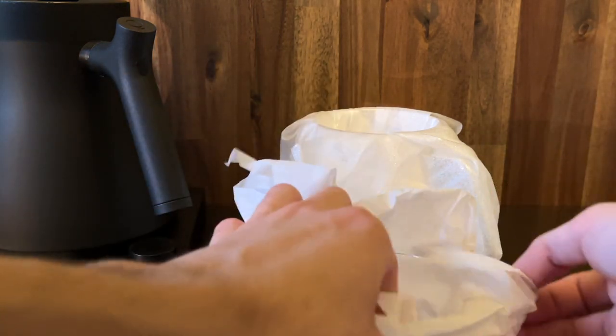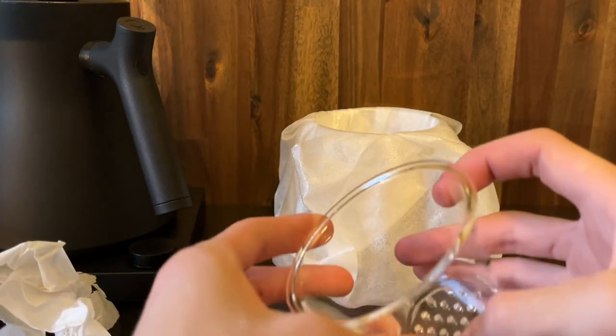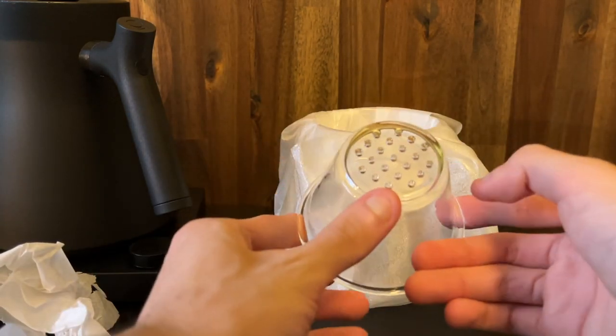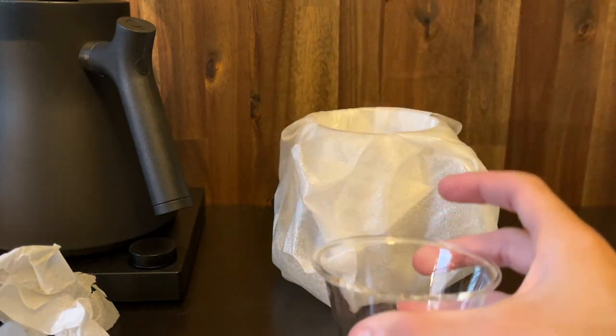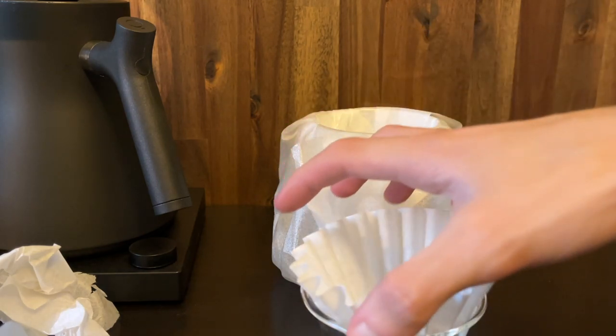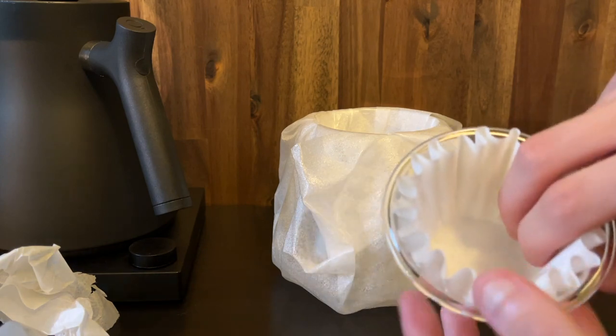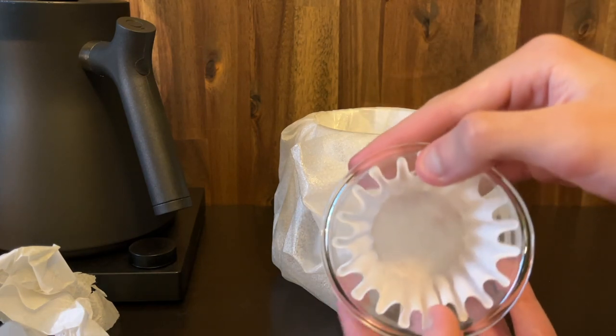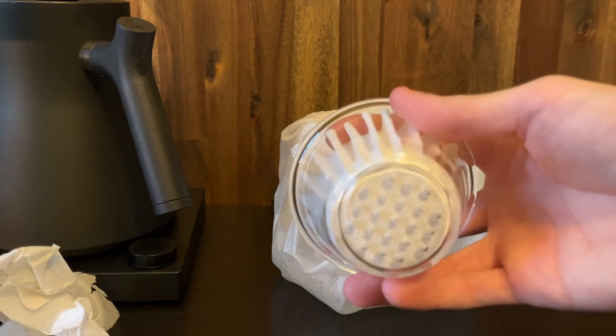All right so this is the dripper, it is an all-glass piece and it suits the Kalita Wave 155 size filters and as you can see you can pop it in and it fits just like so. Perfect.